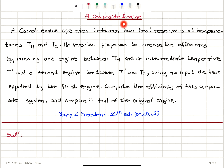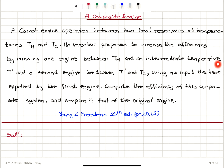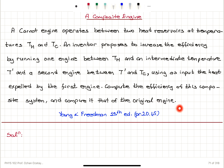A composite engine. A Carnot engine operates between two heat reservoirs at temperatures Th and Tc. An inventor proposes to increase the efficiency by running one engine between Th and an intermediate temperature T', and a second engine between T' and Tc, using as input the heat expelled by the first engine. Compute the efficiency of this composite system and compare it to that of the original engine.